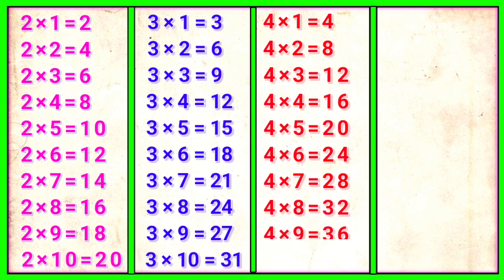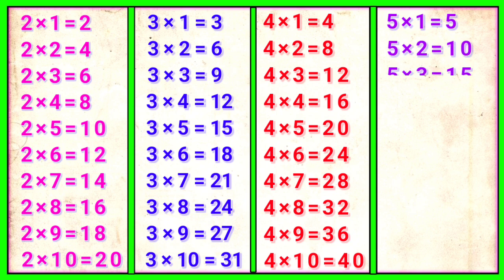4 9s are 36, 4 10s are 40. 5 1s are 5, 5 2s are 10, 5 3s are 15.